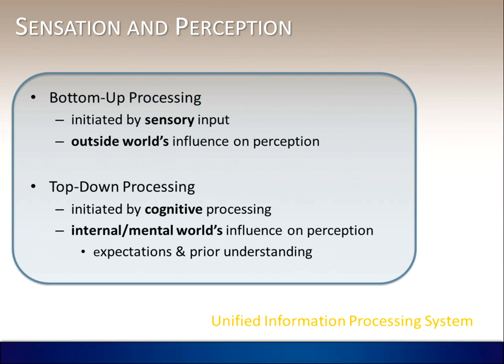Bottom-up and top-down processes occur together — not one first and then the other, and not sometimes one or the other. They happen in tandem. Therefore, we call this a unified information processing system — the process of sensation and perception happening at the same time.